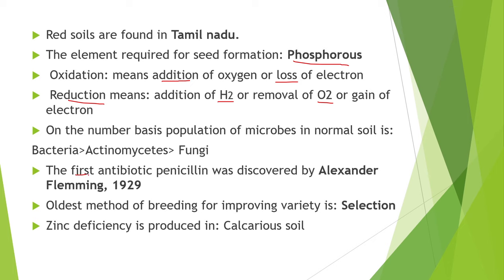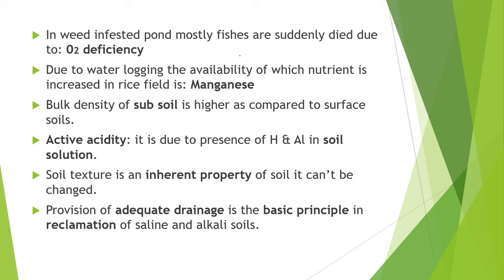Next point is, the first antibiotic penicillin was discovered by Alexander Fleming in 1929. The oldest method of breeding for improving variety is selection. Zinc deficiency is produced in calcareous soil. In weed-infested ponds, fish mostly die suddenly due to oxygen deficiency.